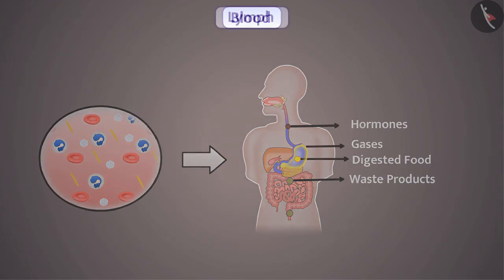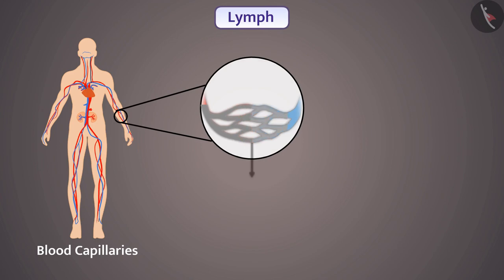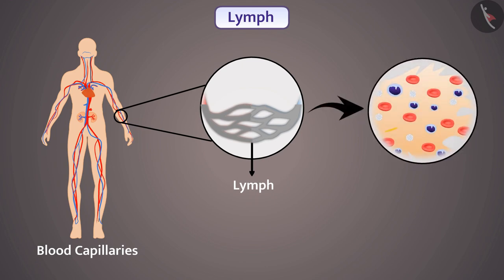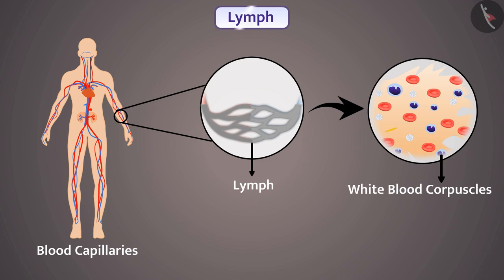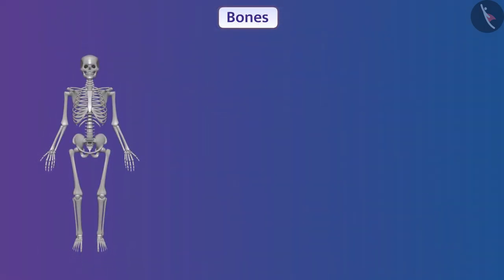From blood capillaries, a fluid is secreted which is called lymph. This fluid is present around the cells of the body. The cells of the lymphatic tissue — that is, white blood corpuscles — are suspended in the fluid matrix. Lymph provides immunity to the body.